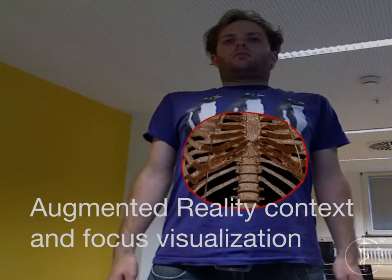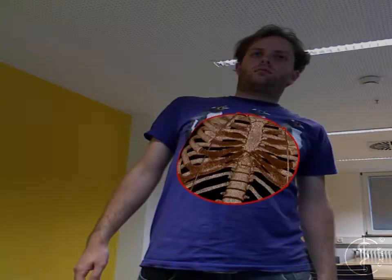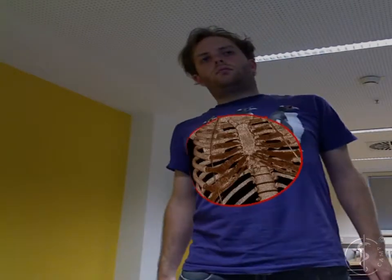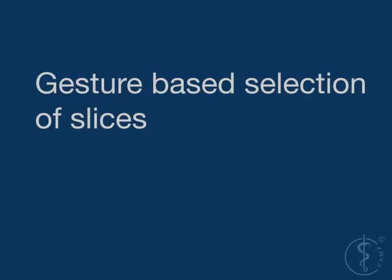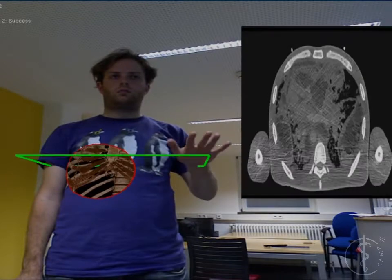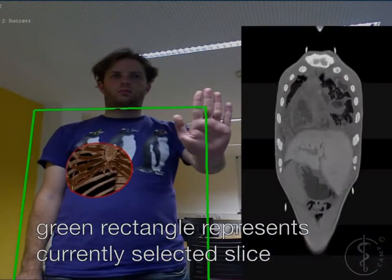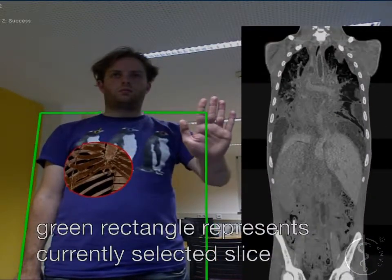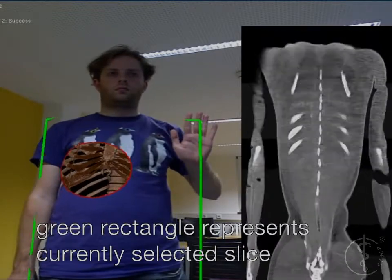Here a video-based focus and context visualization creates the illusion that the user can look into his own body, although we use the CT of another person. Using hand movement the user can select 2D slices from the CT or the photographic dataset. The green rectangle shows the location of the currently selected slice.